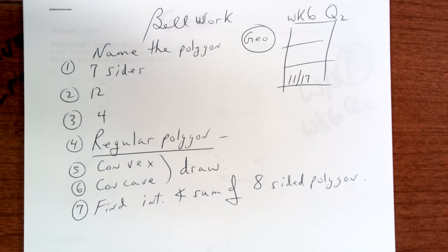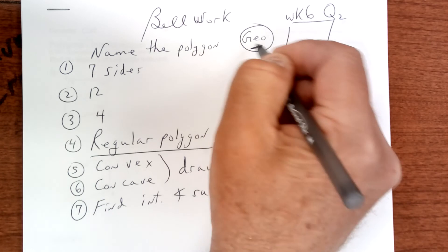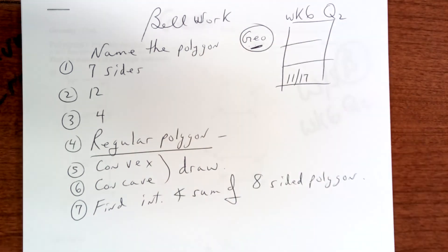Hello and good morning. We're in week six, quarter two, looking at the bell work. We're talking about geometry here. All right, let's take a look. What is the name of a polygon that has seven sides?